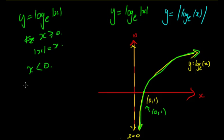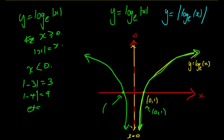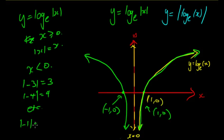But what happens when x < 0? For example, the modulus of −3 gives us 3, and the modulus of −4 gives us 4. So we're going to get the same graph on the other side — when x is negative we get the same function as for positive x values. This point here is (−1, 0), because the modulus of −1 gives 1, so we get log_e(1) = 0. Previously, log_e(−1) would be undefined, hence no graph there. But with the modulus function all negative x values become positive, so we get the same function going on both sides.